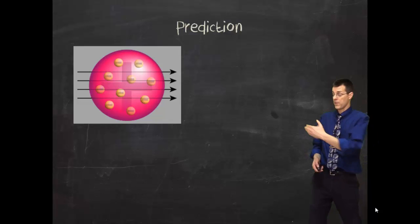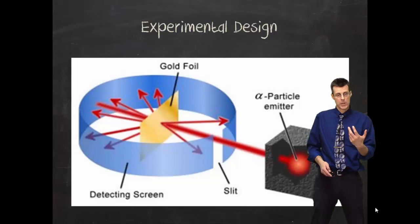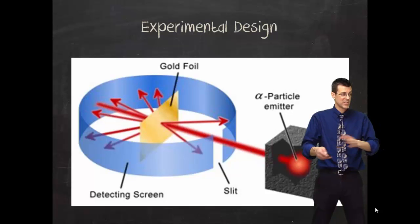So he thought this was going to happen, that the gold atoms looked like that, these big Raisin Buns, and the small radioactive particles were going to fly right through. So he pretty much expected to have what you see running the straight line from that box all the way to the end.